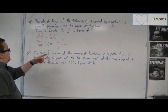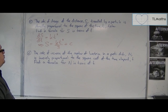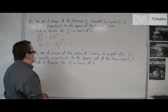Now the rate of increase of the number of bacteria in a petri dish, n, is inversely proportional to the square root of the time elapsed t.